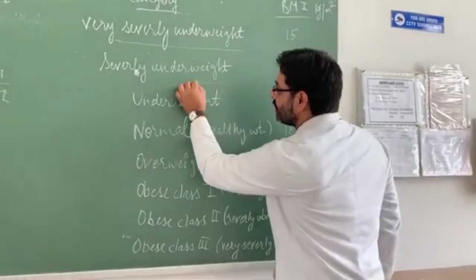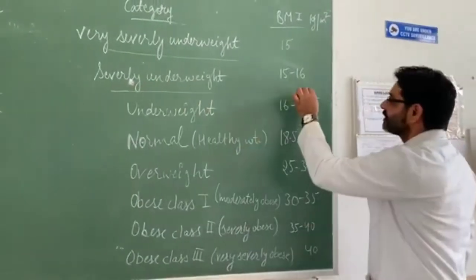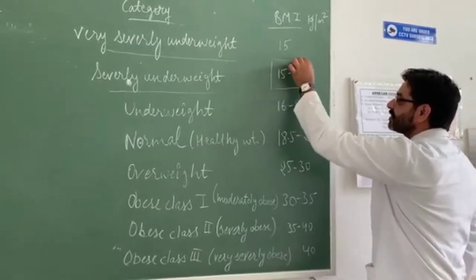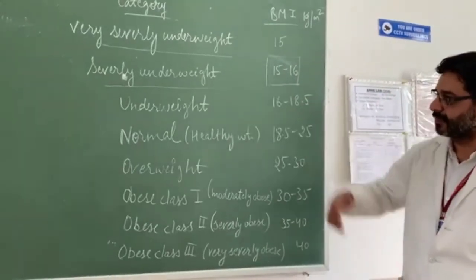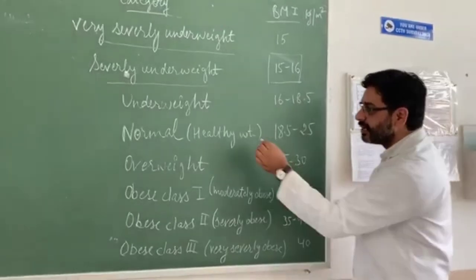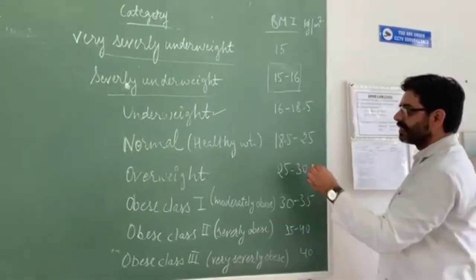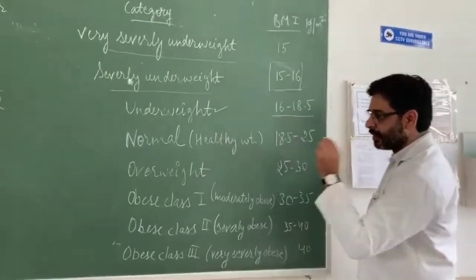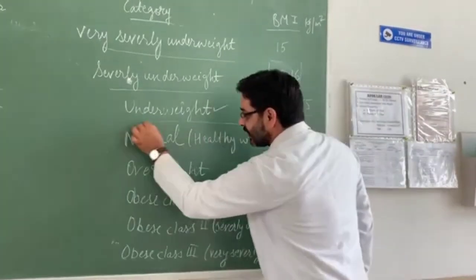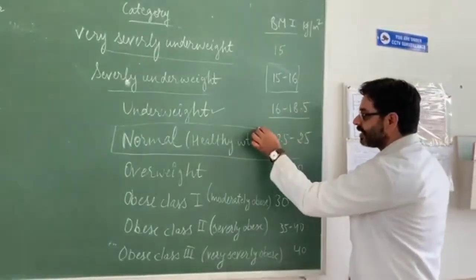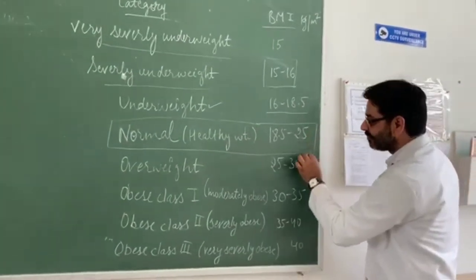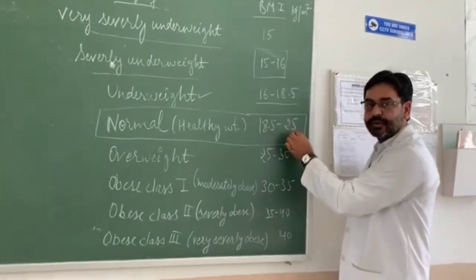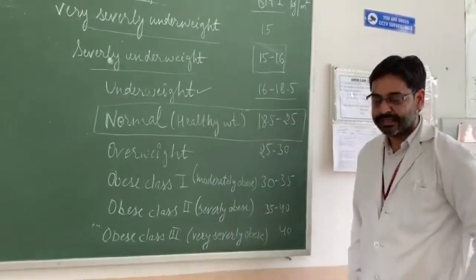Another category is severe underweight, where the person's BMI is 15 to 16. Another category is underweight, where the person's BMI is 16 to 18.5. Persons having a normal BMI are considered healthy, with BMI in between 18.5 to 25 kg/m².